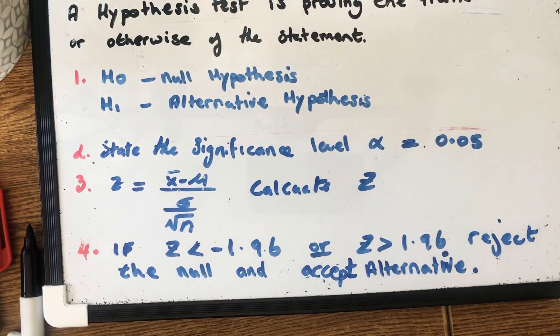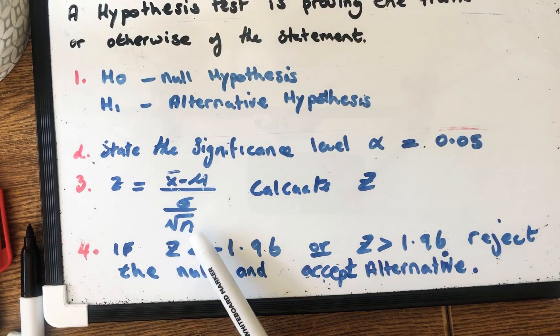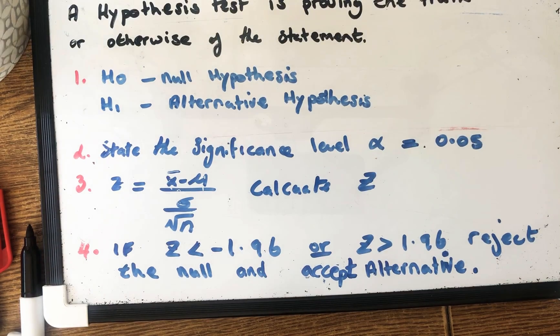Our sigma then is our standard deviation. So how far away we are from our mean. And then our N is our sample size. So the number of, in this case our cow example, N will be 100 because of the 100 cows.